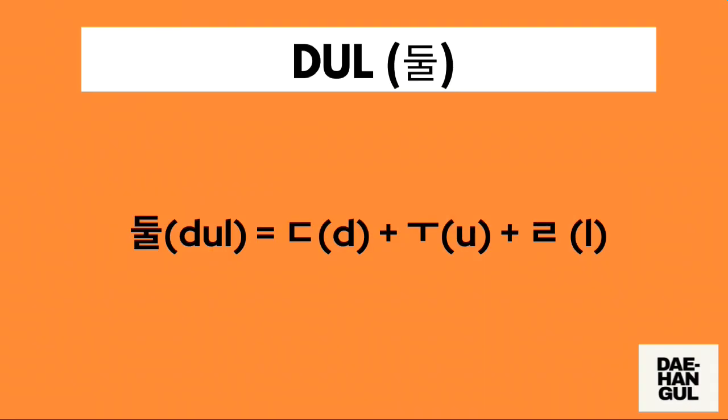How do we write DUL in Hangul? This is composed of just three characters. The first one is a D character, and then it is followed by a U character, followed by an L character. We just need to combine these three to form the Hangul of the word DUL. It's D plus U plus L character to form DUL.